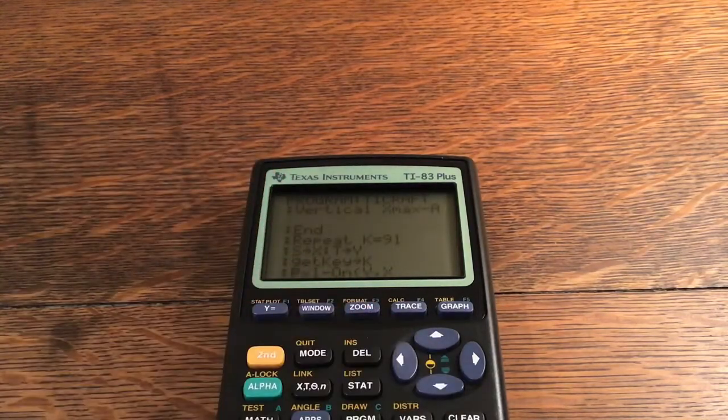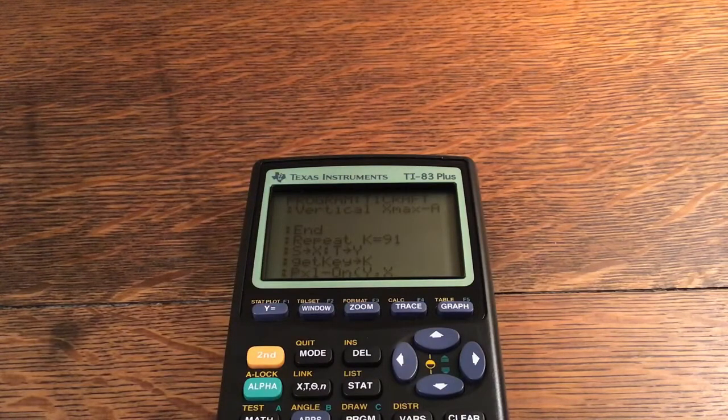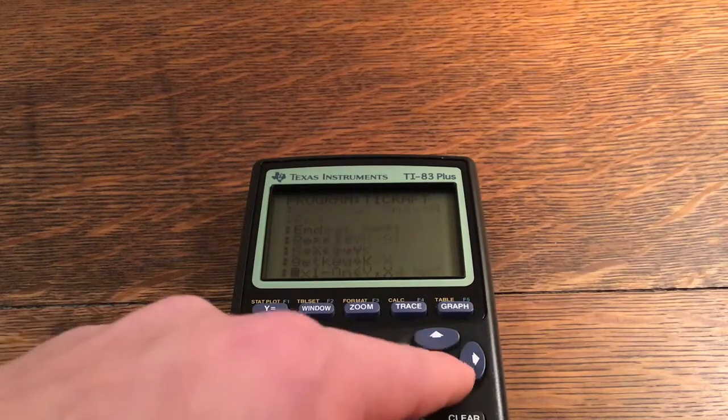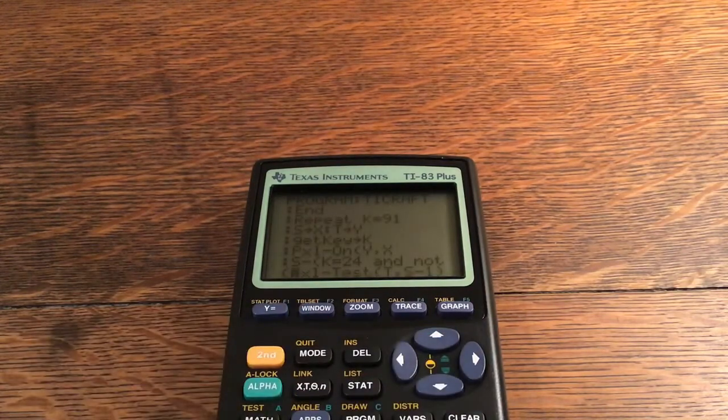For A comma 0 comma 1 comma 1. Horizontal Ymin plus A, Horizontal Ymax minus A, Vertical Xmin plus A, Vertical Xmax minus A. That's putting the borders in on the side. Repeat until K is equal to 91 which is the store button. You click the store button to get the menu where you can save and quit.